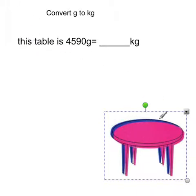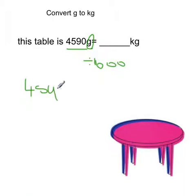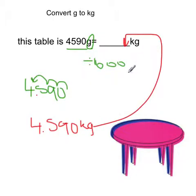So let's look at this table — it is 4,590 grams. To convert grams to kilograms, we divide by 1,000 and shuffle the numbers back three spaces: 1, 2, 3 — putting the decimal point there. The answer is 4.59 kilograms. Again, you don't need the trailing zero.